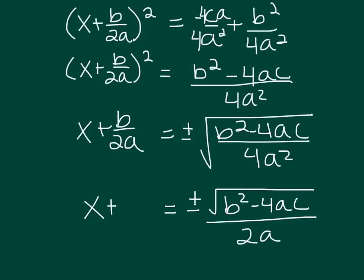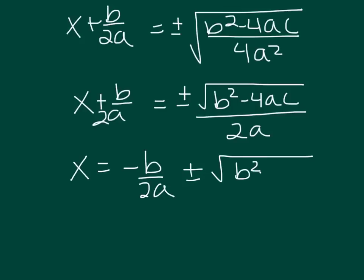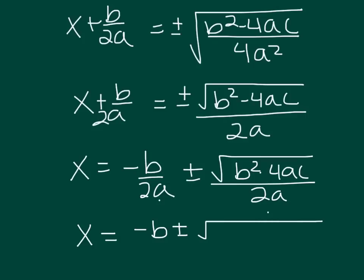This is x + b/2a over here, and I want to get x by itself. I need to subtract b/2a. So negative b over 2a plus or minus the square root of b² minus 4ac all over 2a. And since we have a common denominator, I'm going to put it all together and get negative b plus or minus the square root of b² minus 4ac all over 2a.